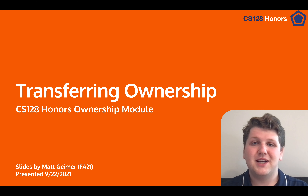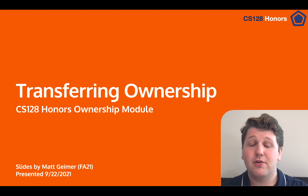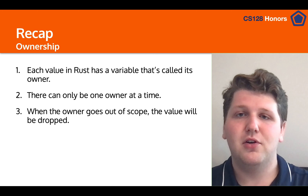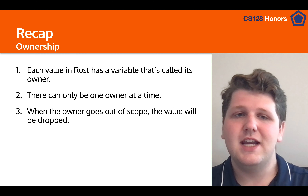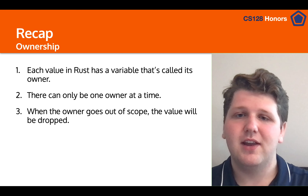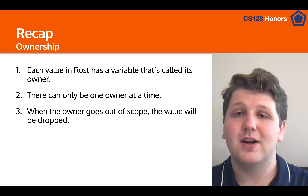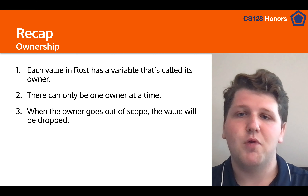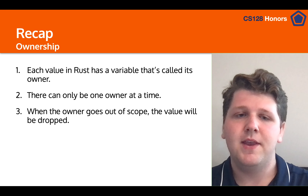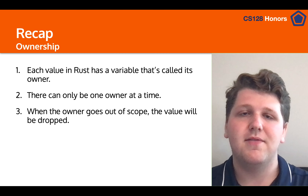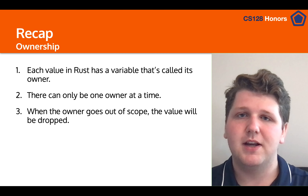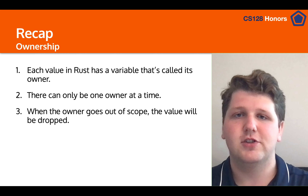Hello and welcome back to CS128 Honors. In this lesson video we're going to talk about ownership in Rust and specifically how it works with functions. To recap: each variable in Rust has another variable called its owner, there can only be one owner for each variable at a time, and when that owner goes out of scope the value will be dropped. These are the three rules of ownership.